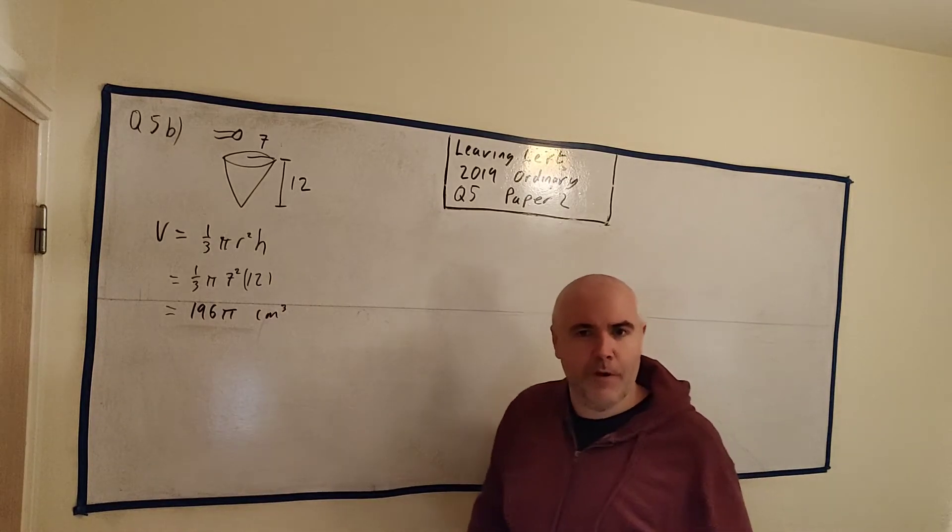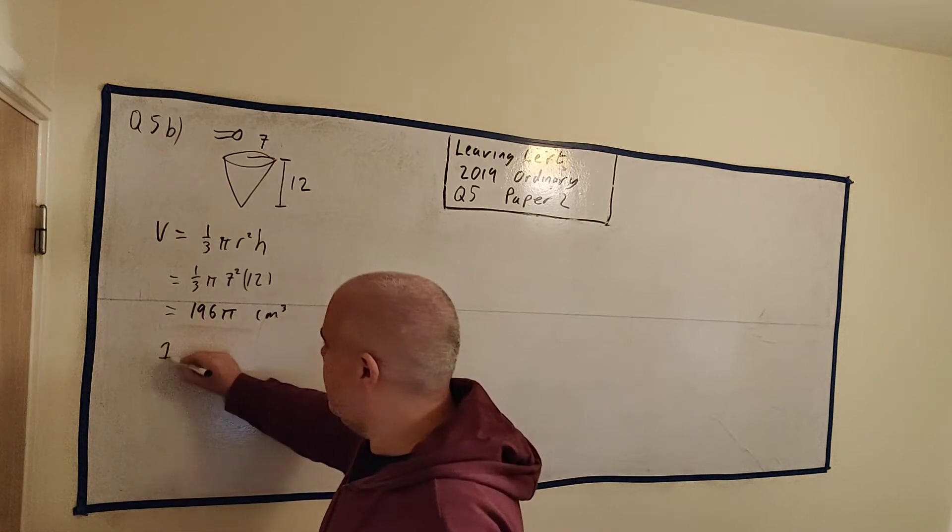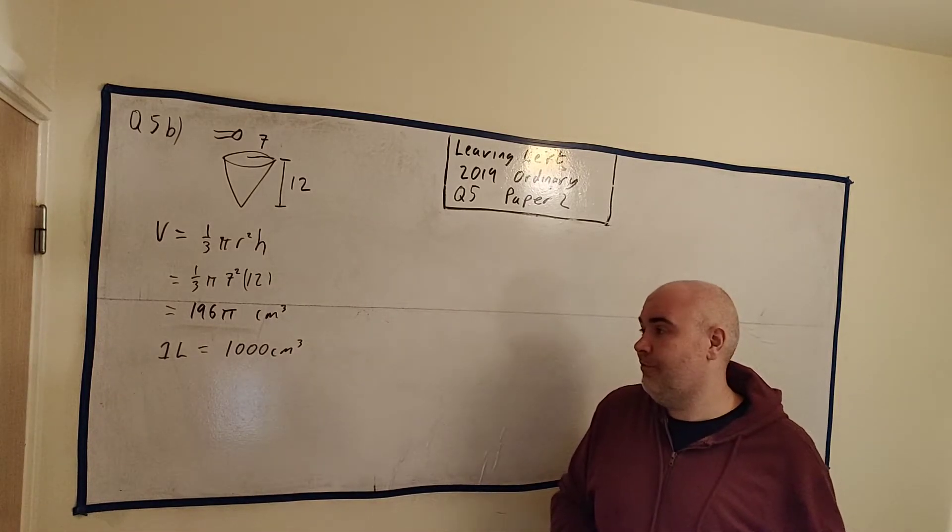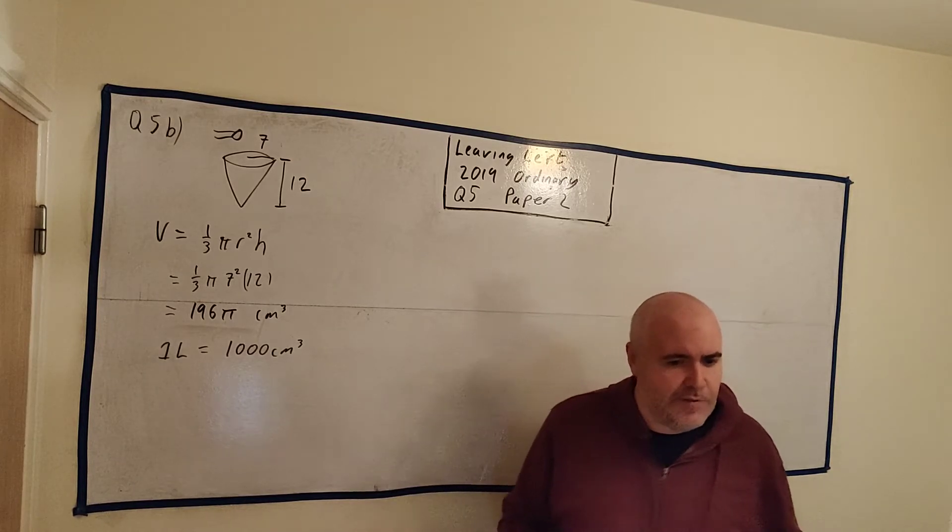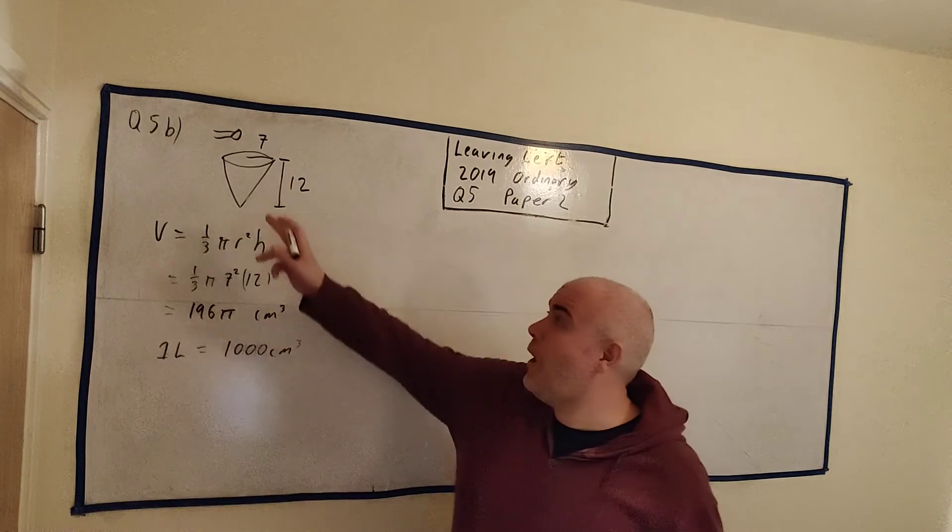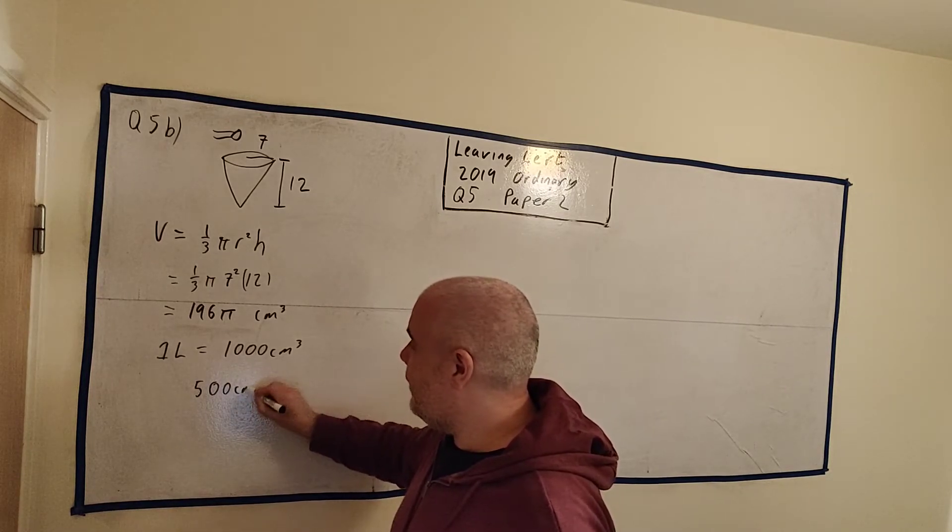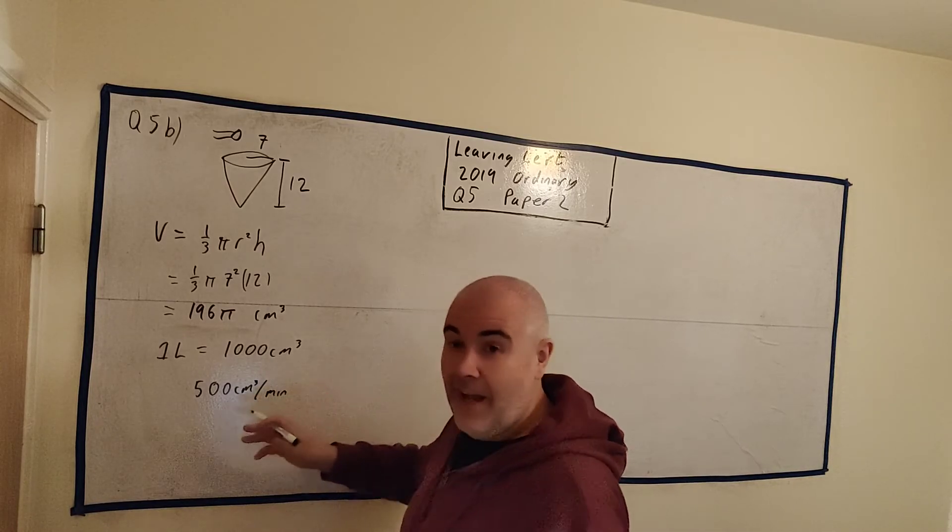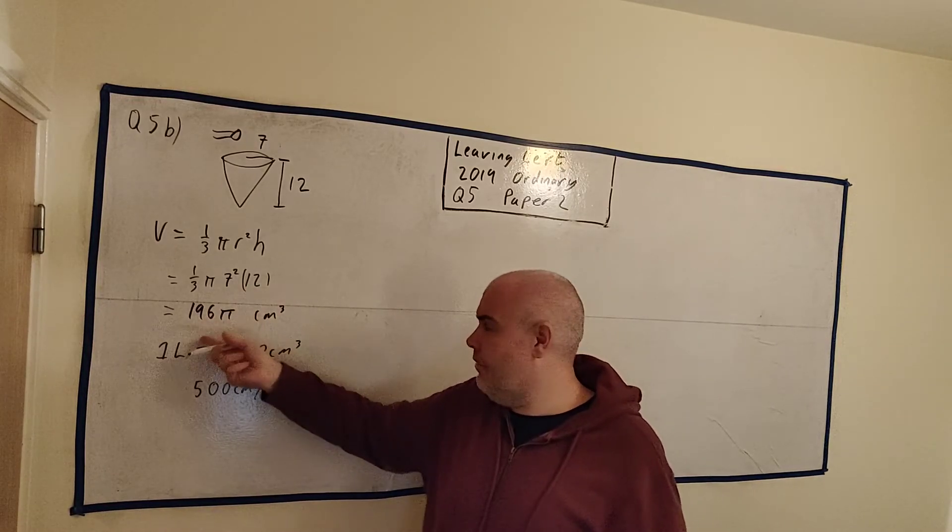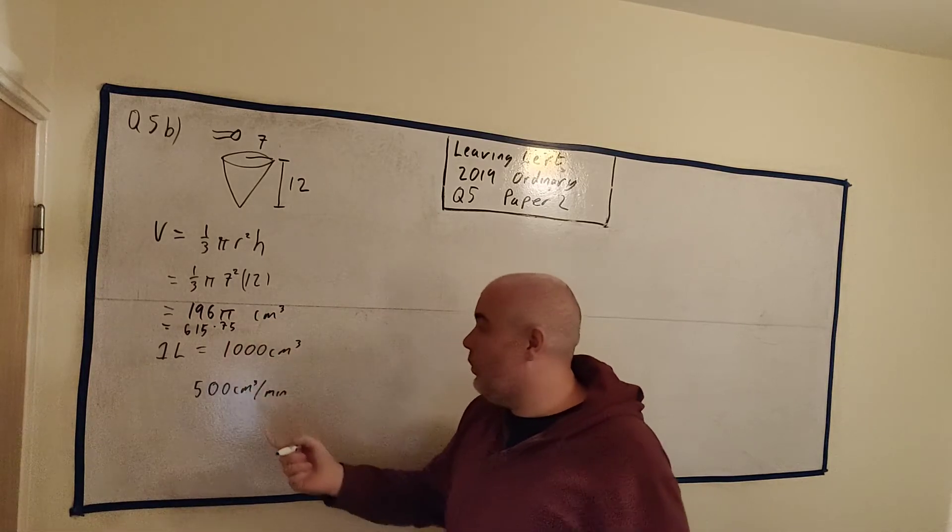So how many liters goes into that? Now, here's our first problem. This is a physics question, really. We need to know what a liter is. So you need to know that one liter is equal to 1,000 centimeters cubed. That's something we need to know. I'm sorry, there's no other way around this. I don't think they would tell us that in the question. Maybe they should have because it's a maths question, not a physics question. But we need to know one liter equals 1,000 centimeters cubed. And remember, the pipe is pumping water in half a liter every minute. So another way to write that would be 500 centimeters cubed per minute.